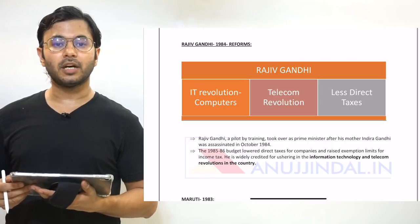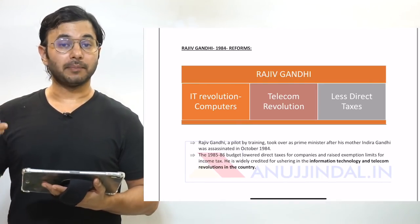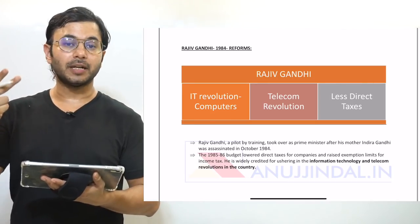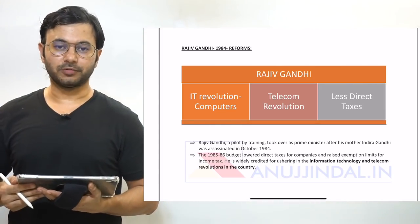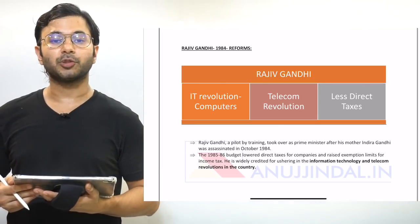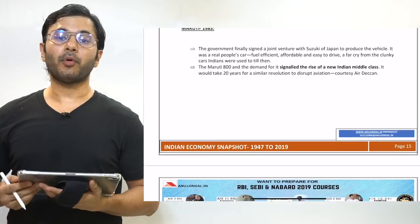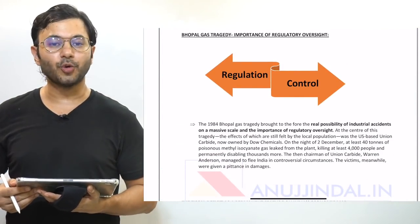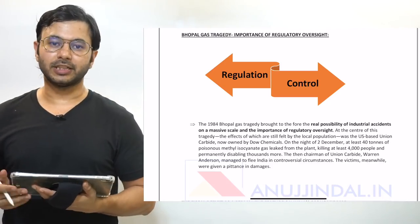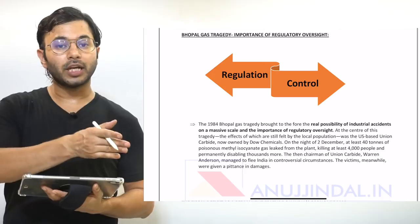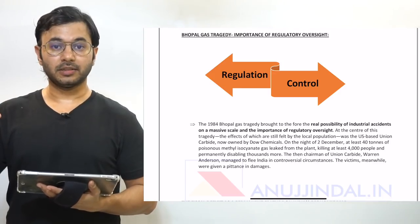Reforms which started from Rajiv Gandhi's time in 1984 included three major contributions: the IT revolution, the telecom revolution, and reduction in direct taxes. All this resulted in more growth, more income in the hands of people, more consumption, more savings, and more investment. The Bhopal gas tragedy in 1984 made India realize the importance of regulation. The key difference between regulation and control is that regulation promotes industries whereas control suppresses them.